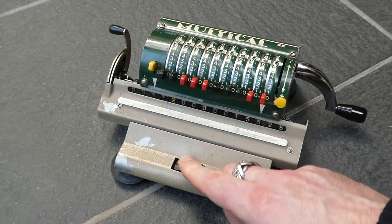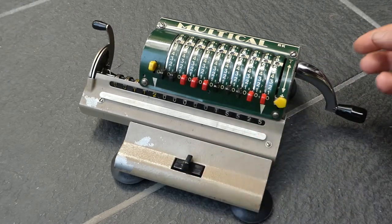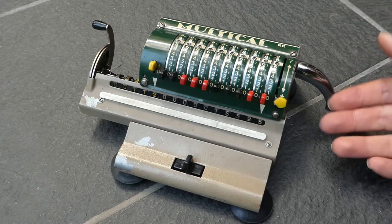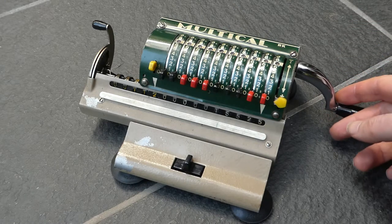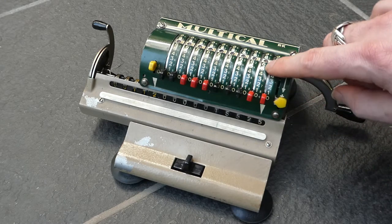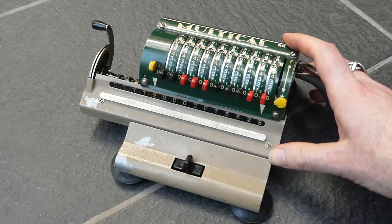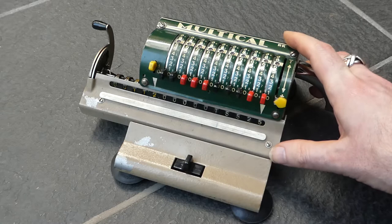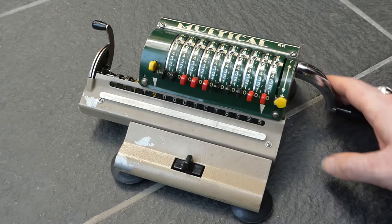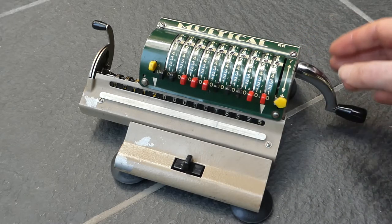Unfortunately there is no subtraction, at least not by just turning the crank in the opposite direction. Instead you have to use complementary digits. There is a later version of the multator, the multator 4, in which this lack has been fixed.